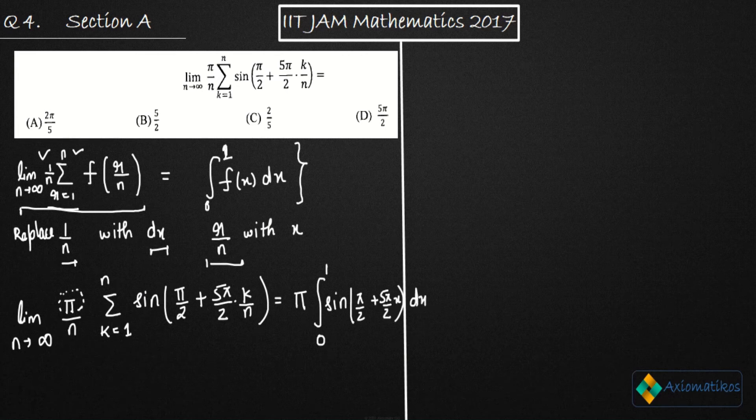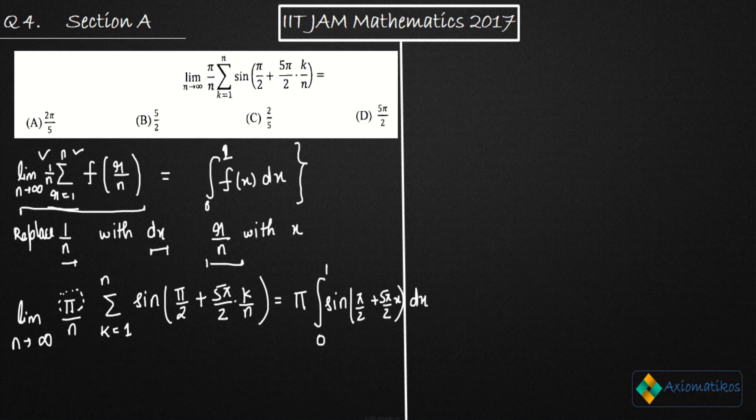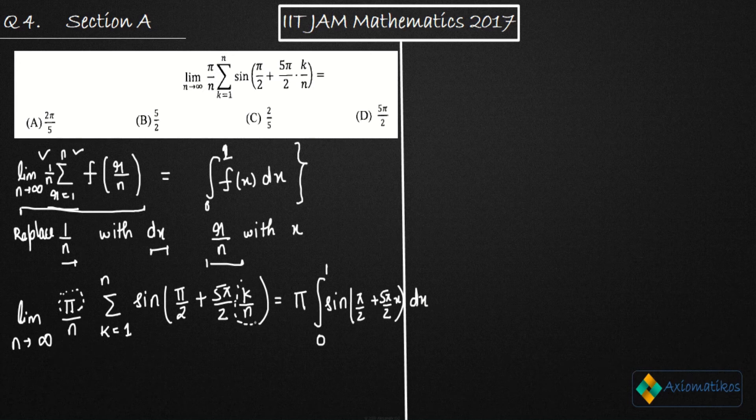So after that, what you can say using this result that this thing will be equal to 0 to 1 sine of pi by 2 plus 5 pi by 2 X. You are getting my point or not? Here I have replaced K over N with X and 1 over N with dx.